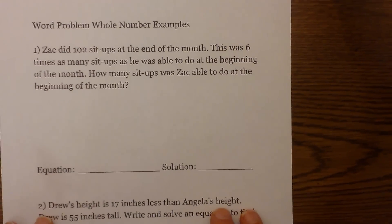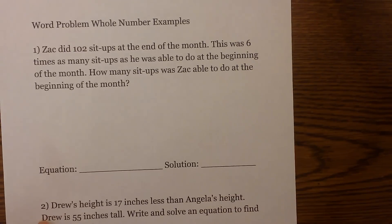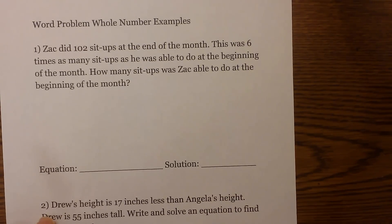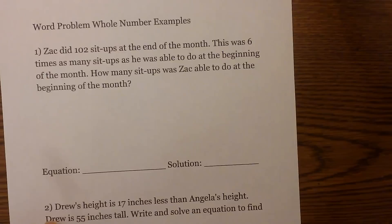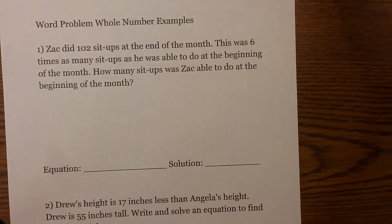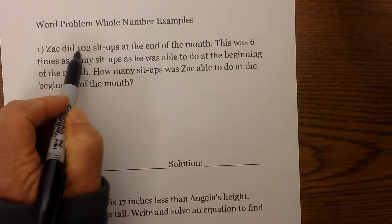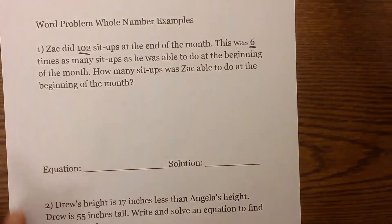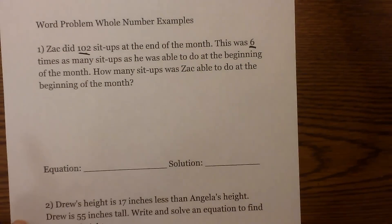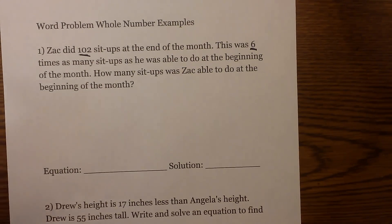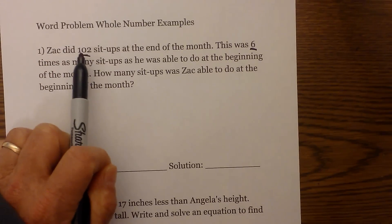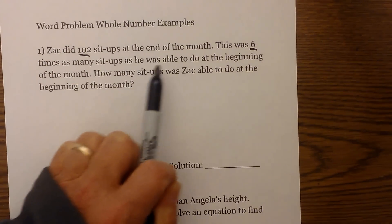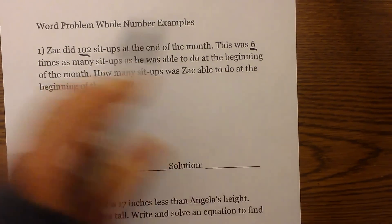Example number one: Zack did 102 sit-ups at the end of the month. This was six times as many sit-ups as he was able to do at the beginning of the month. How many sit-ups was Zack able to do at the beginning of the month? So we have 102 sit-ups and this was six times. The first thing I am going to do is find the solution.